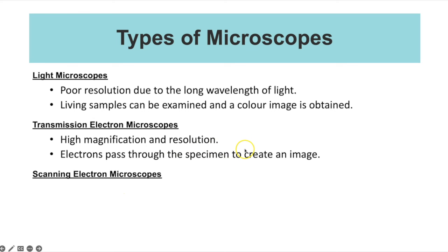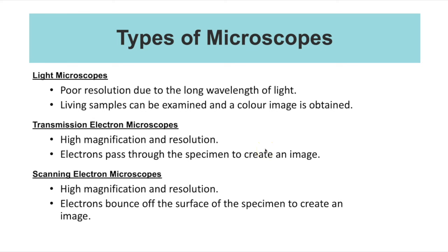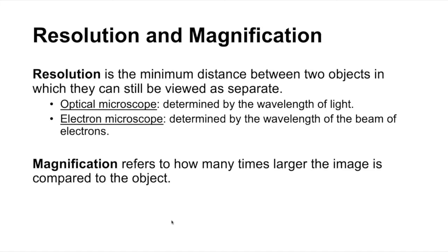A transmission electron microscope enables you to see the internal structures of organelles. Scanning electron microscopes also have higher magnification and resolution because images are created with electrons, which have a shorter wavelength than visible light. This time you get a 3D image showing the contours on the outside, because the electrons bounce off the surface and the way they reflect creates that 3D image.